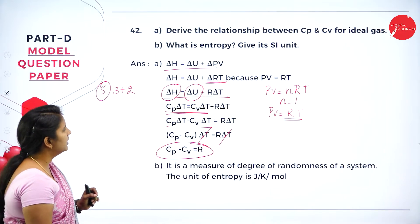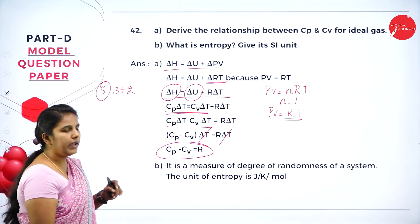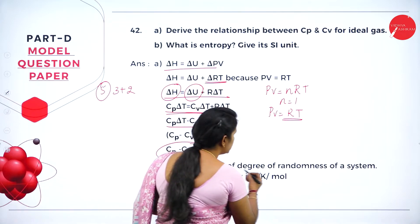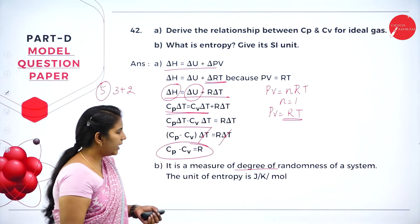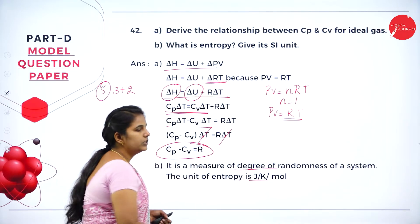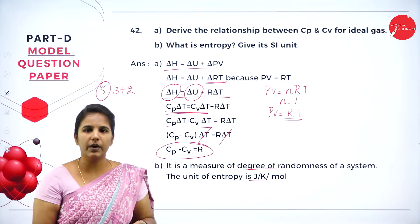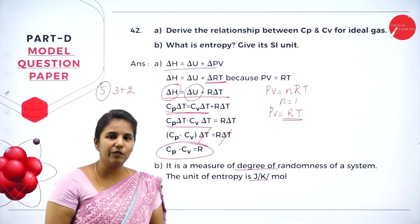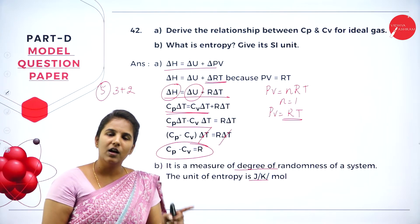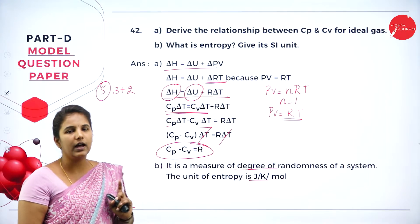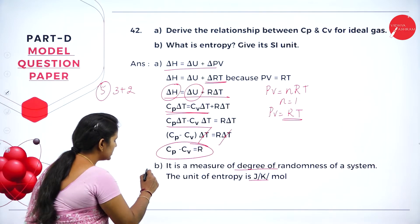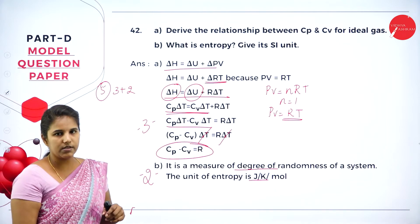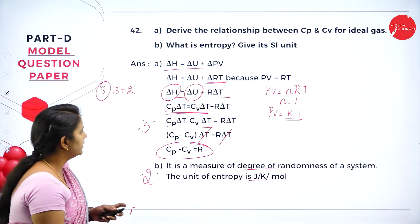Entropy is nothing but the degree of randomness of the system, and its SI unit is joules per Kelvin per mole (J K⁻¹ mol⁻¹). Writing the correct definition of entropy gives 1 mark, and writing the SI unit gives 1 mark — totalling 2 marks. The entire question carries 5 marks (3 + 2).